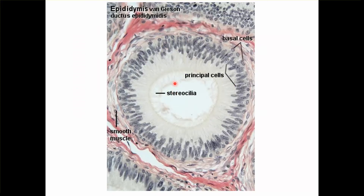Another slide to show the epididymis using a different stain — Van Gieson stain. You can again see the pseudostratified epithelium with stereocilia. The cells are made up of principal cells — the columnar cells — and the basal cells.